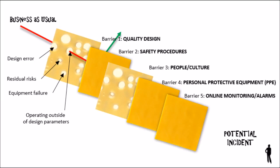And then you've got your second barrier, which might be design. Someone might have made a mistake in the design, or there might be a particular part of the design that just doesn't cover every possible risk. If we were talking about the hierarchy of risk control,